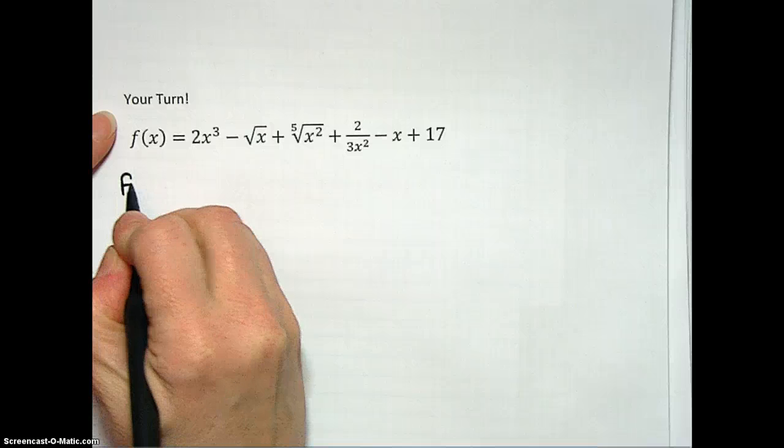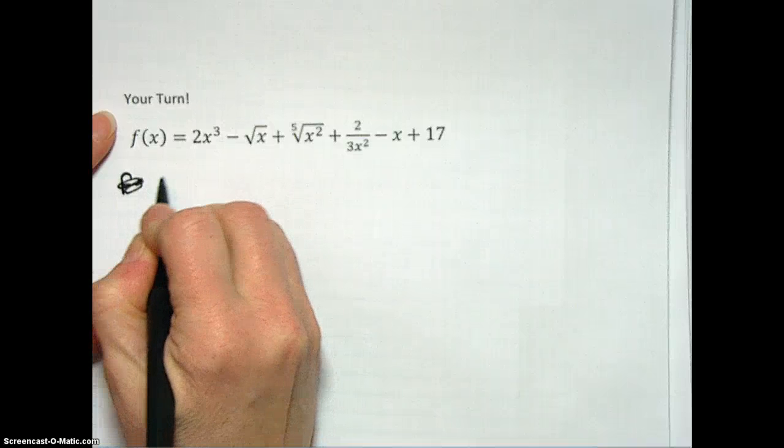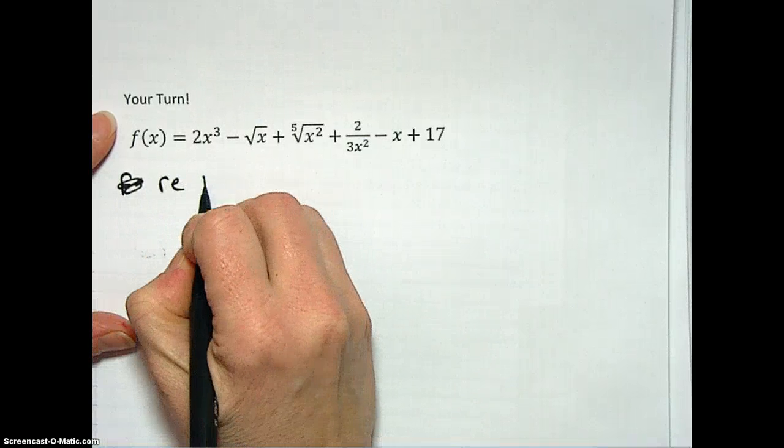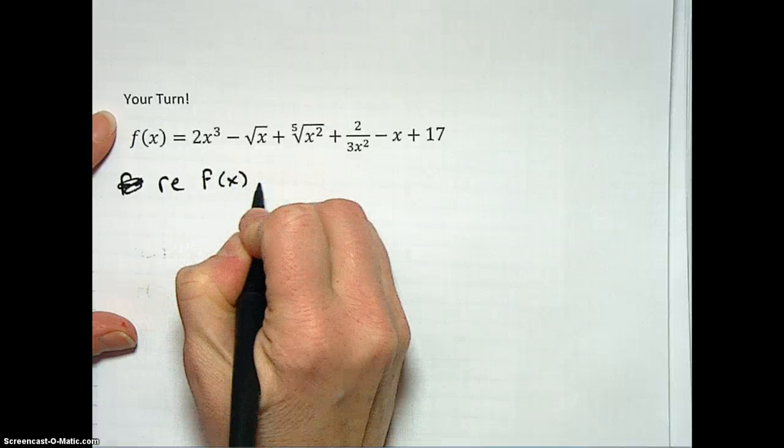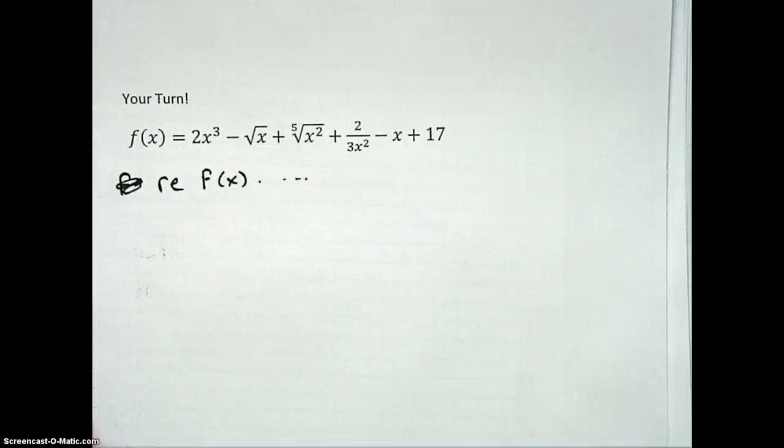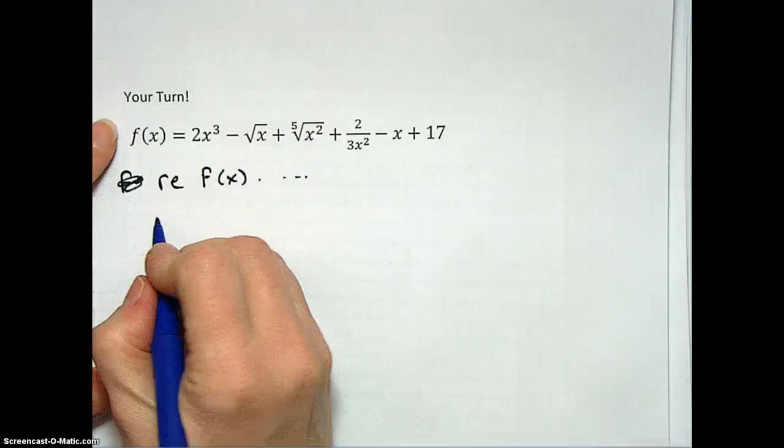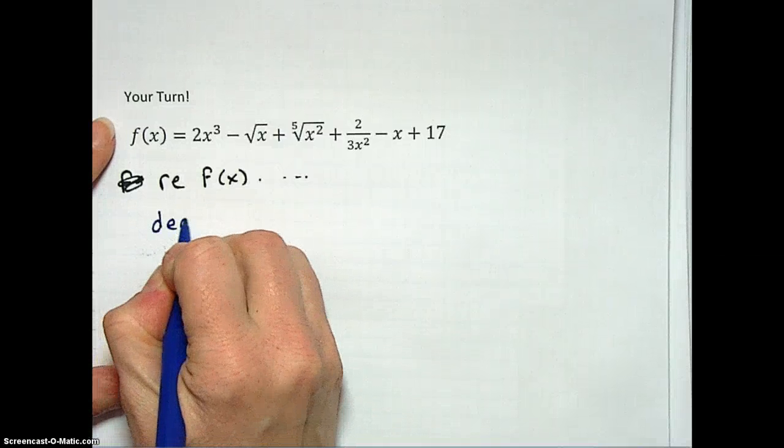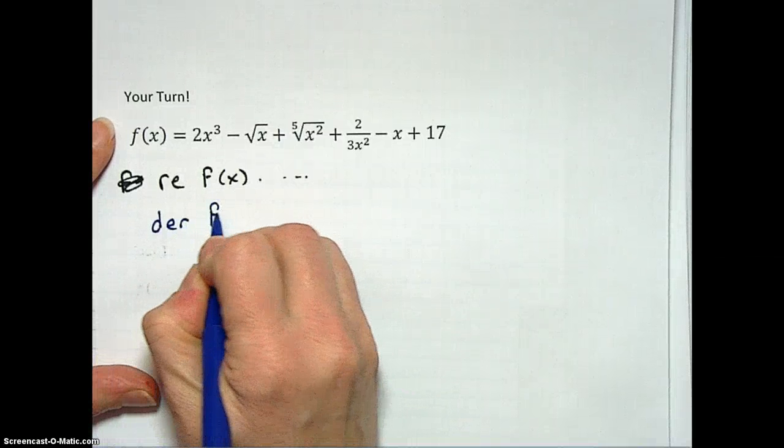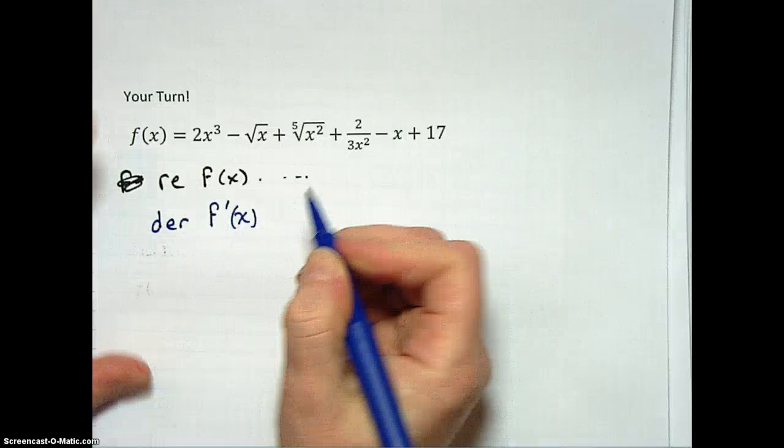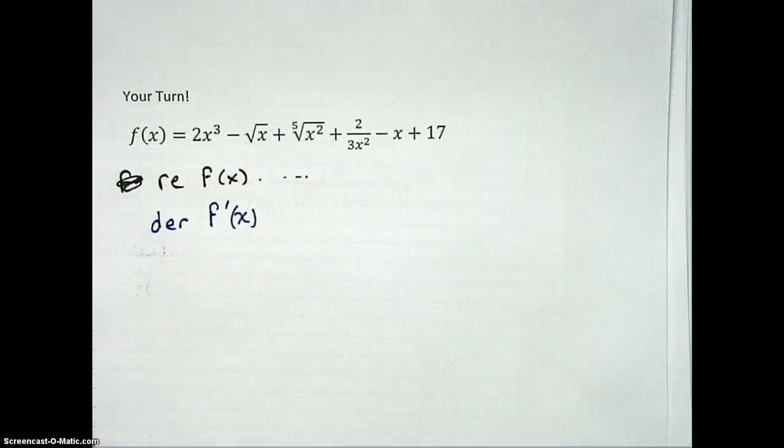Your rewrite. Oh my gosh, I'm making a mess. Rewrite. F of x, blah, blah, blah. And then, if you feel fancy, go ahead and get a blue pen and do your derivative. F prime of x. Show all your steps on this one so that I can see if you're making any errors where you're making them. All right. I'll see you next class. Thanks for watching. Bye.